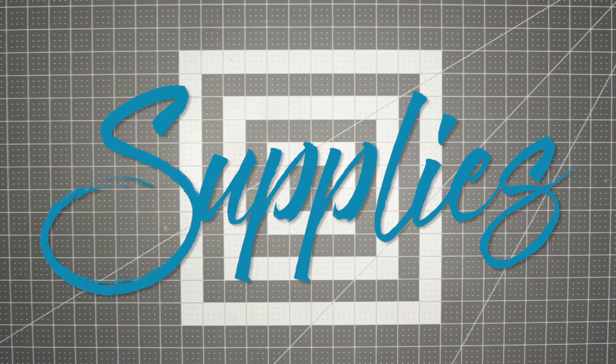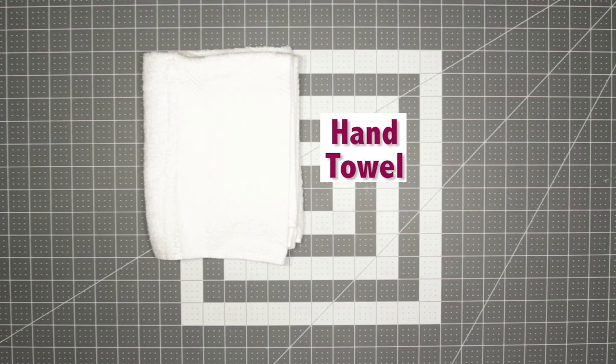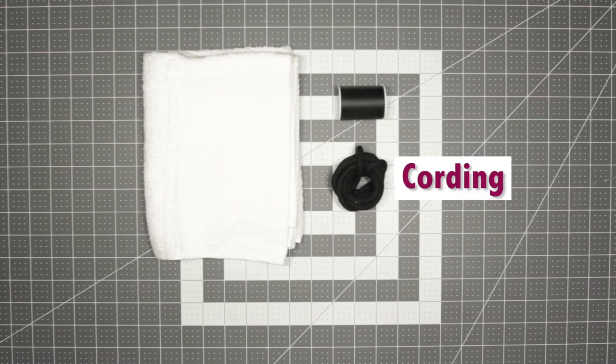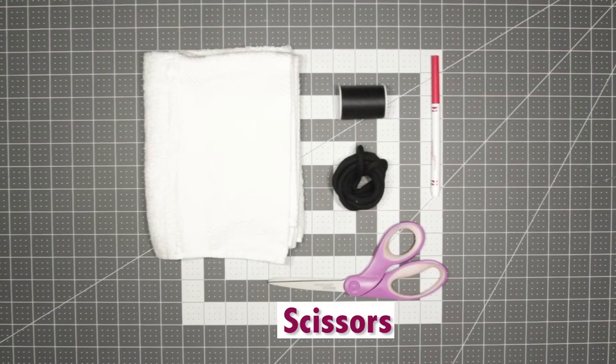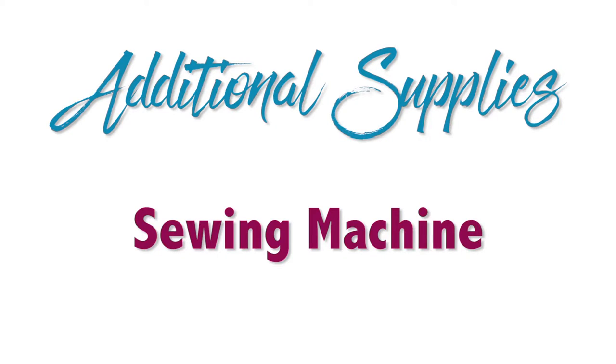The supplies you will need for this project are a hand towel, thread, a little bit of cording or ribbon, a marker, a scissor that can cut the cord, and a sewing machine.